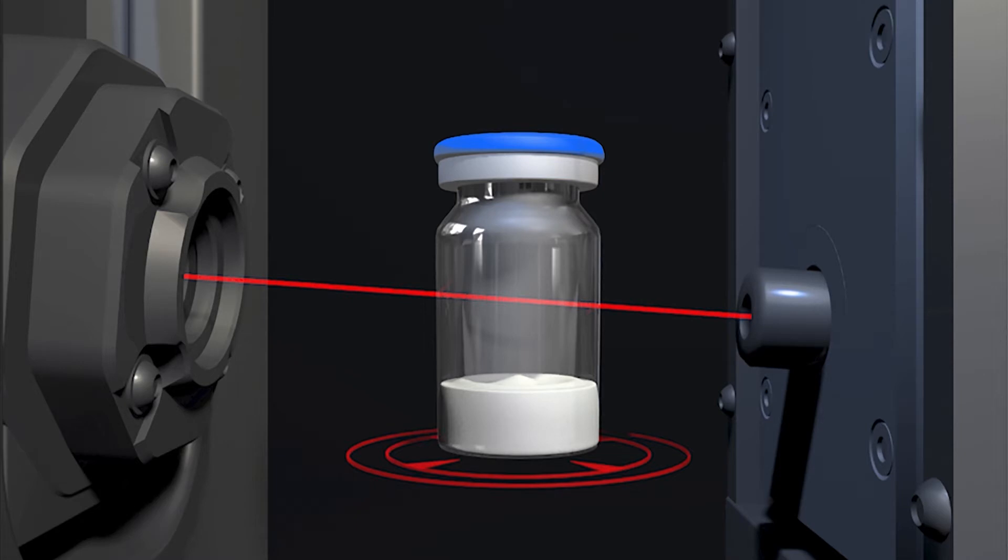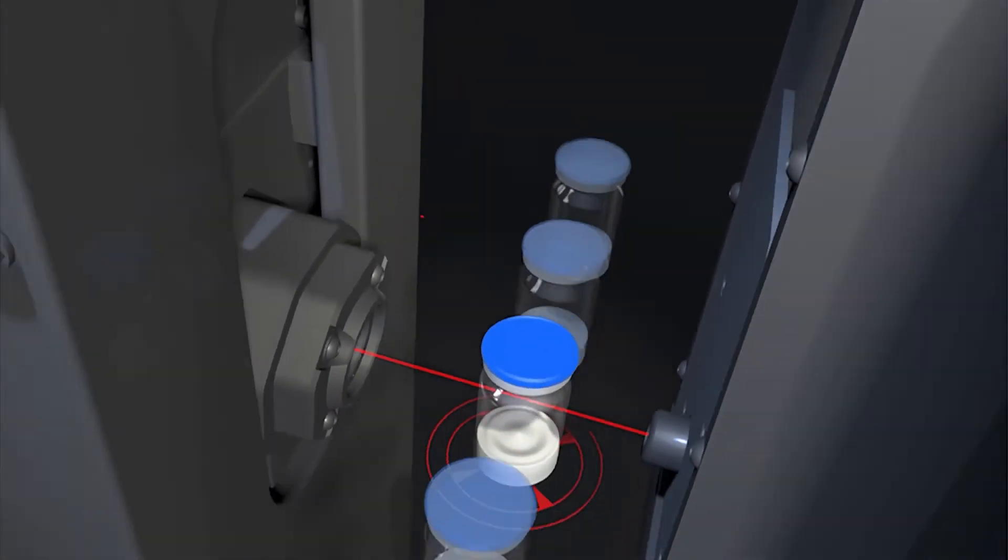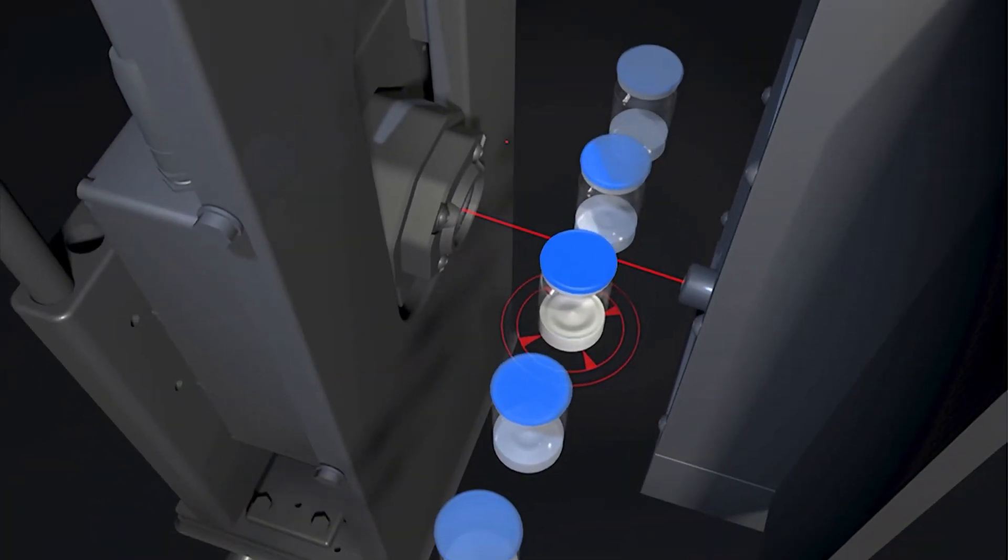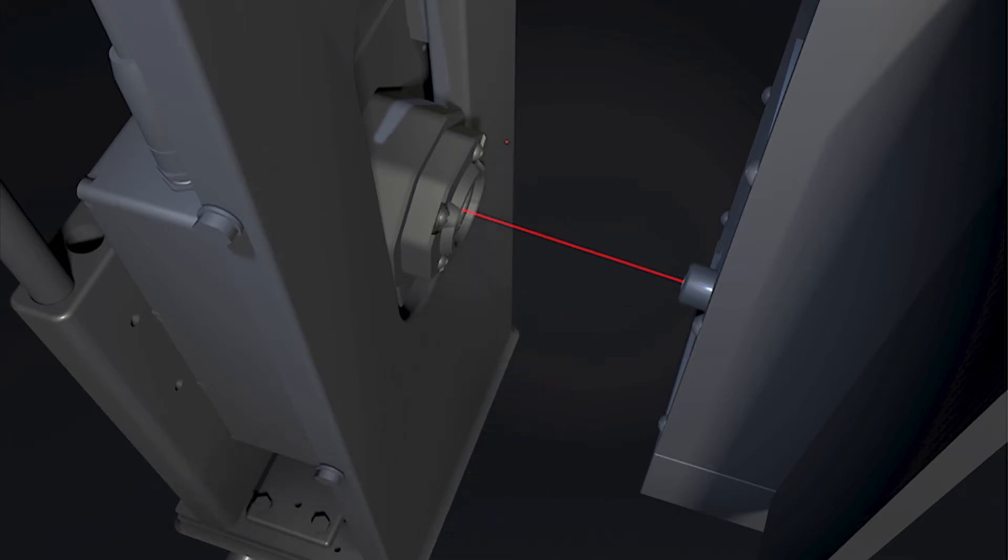The high-performance processor now analyzes the data acquired by the sensor. If a vial is found to be defective, it is automatically rejected.